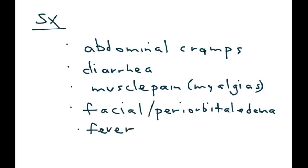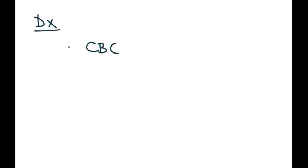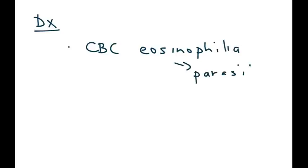The patient can also present with fever, and a rather interesting finding is blood under the nails, something known as splinter hemorrhages. In terms of diagnosis, a CBC will show eosinophilia, which is a very common finding in parasite infections.